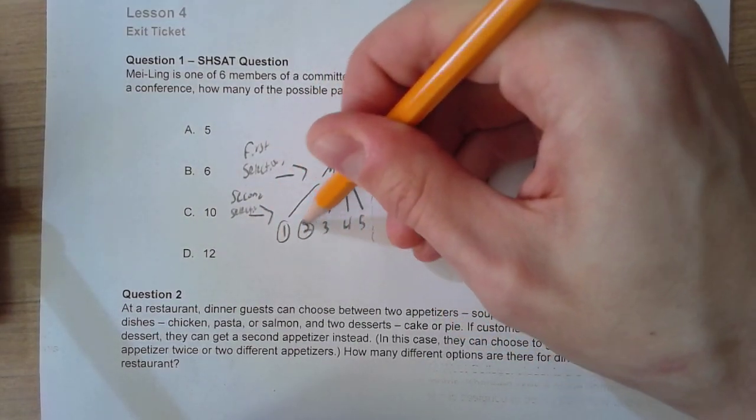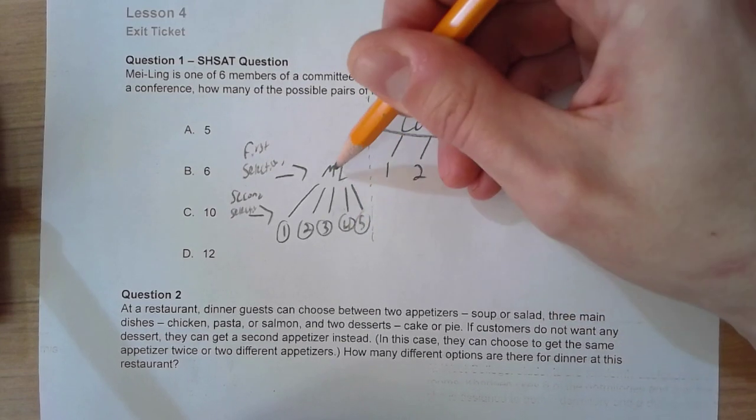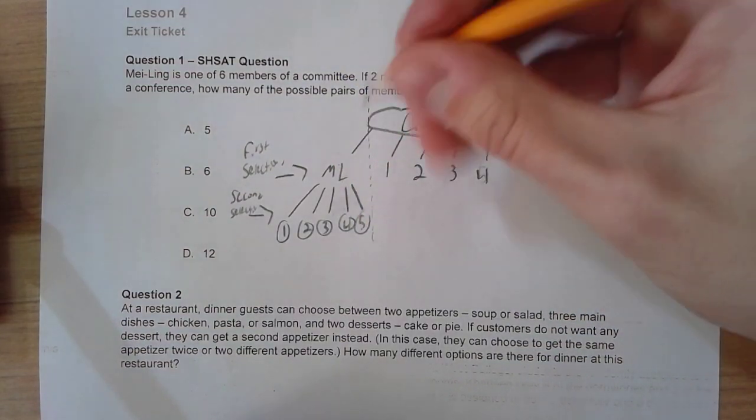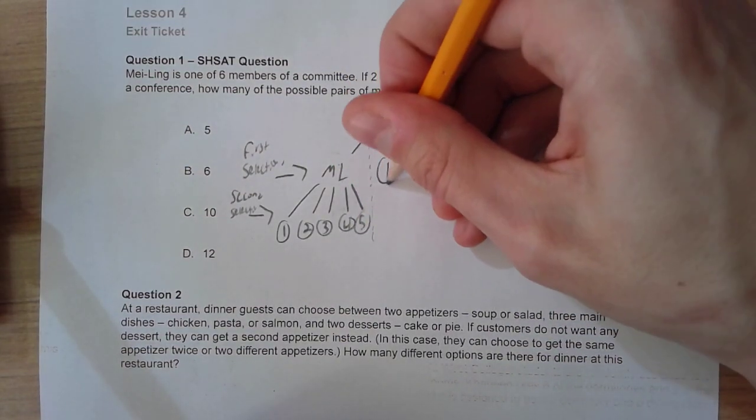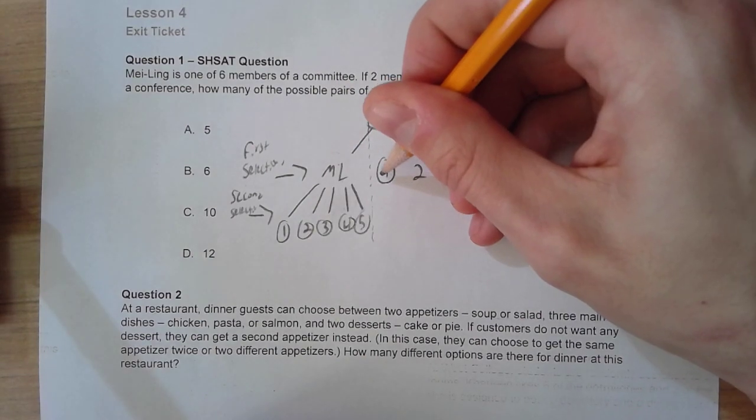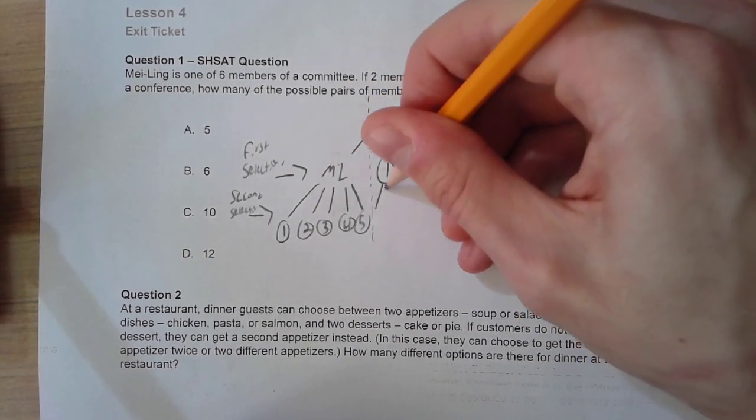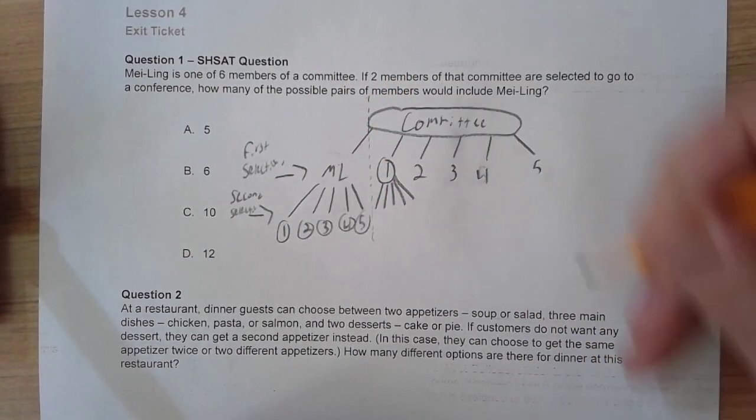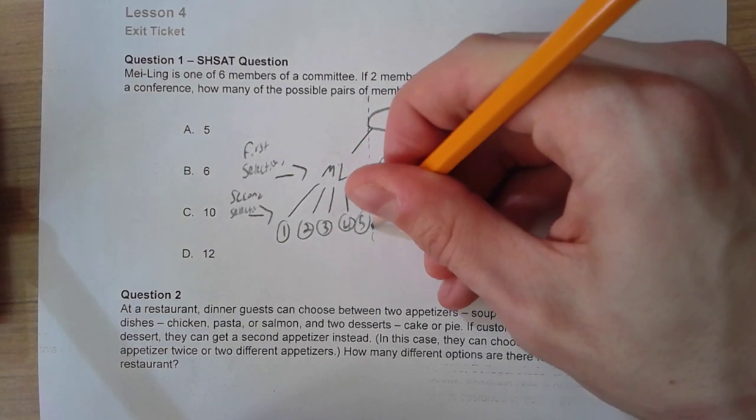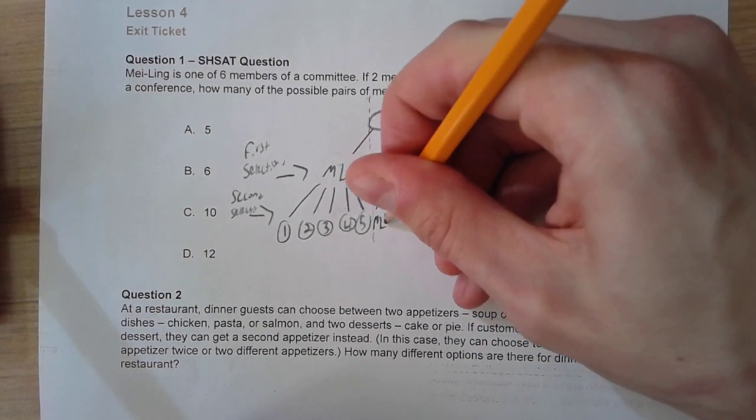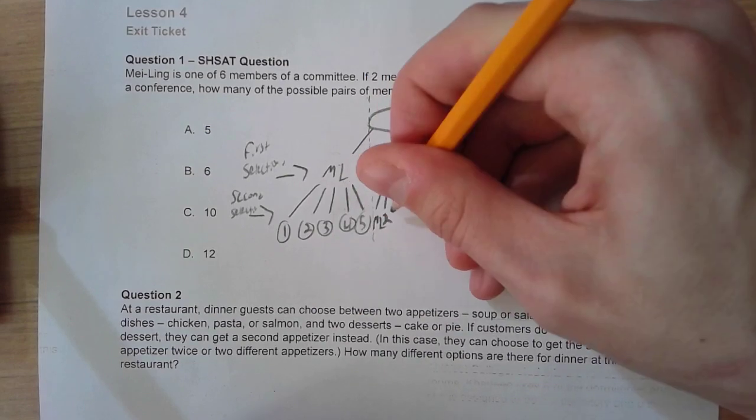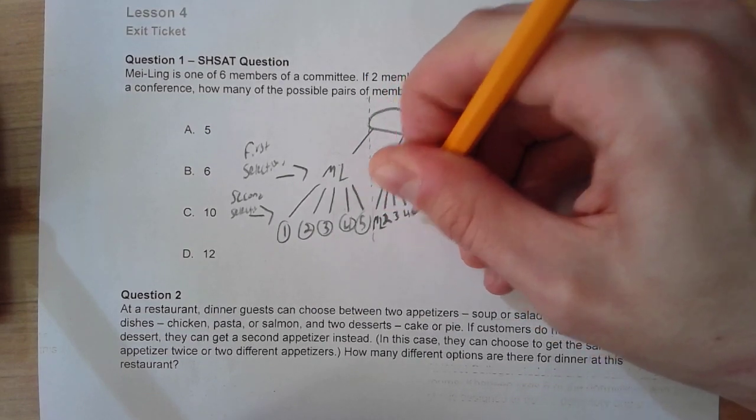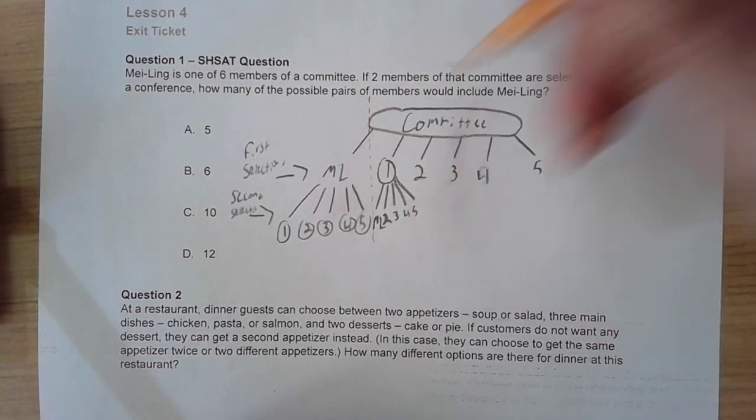And again, all of these are going to be favorable outcomes because Mei Ling is in our first group. If we continue through, now person one was selected, we have one, two, three, four, five selections. The first is going to be Mei Ling and then person two—I'm sorry—three, four, and five, excluding person one.